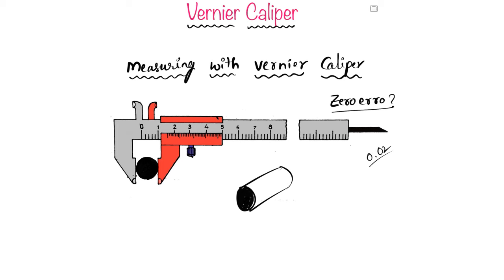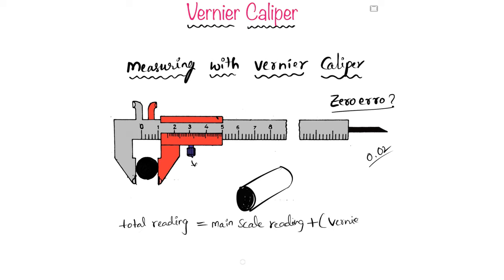To measure the diameter of this rod, first place it in between the two measuring tips, then lock the screw so the vernier scale does not slide on the main scale. We need a formula to calculate the total reading: total reading = main scale reading + (vernier scale reading × least count).